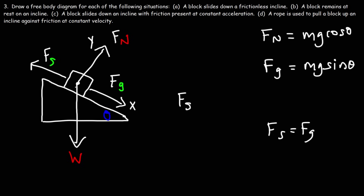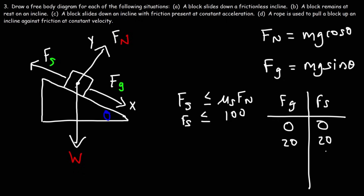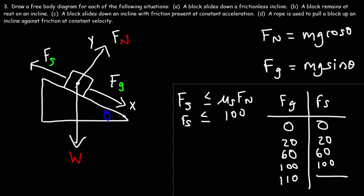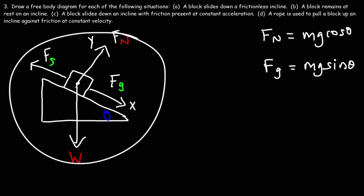The static frictional force is less than or equal to mu s times the normal force. Static friction is an inequality — it will match Fg up to a maximum. For example, if the maximum is 100: when Fg is 20, Fs is 20; when Fg is 60, Fs is 60; when Fg is 100, Fs is 100. If Fg is 110, static friction has been exceeded, the block begins to slide, and you have kinetic friction instead. Static friction matches Fg up to a certain limit.